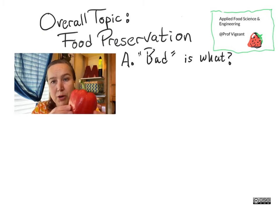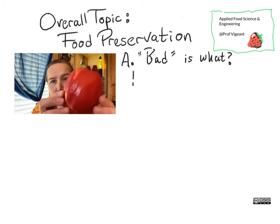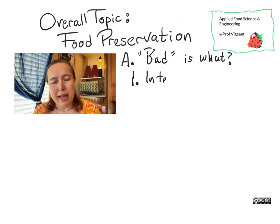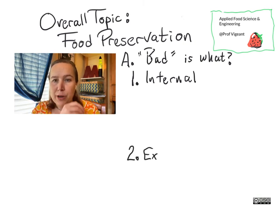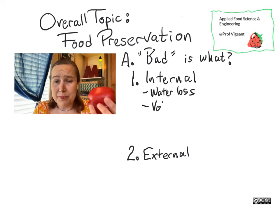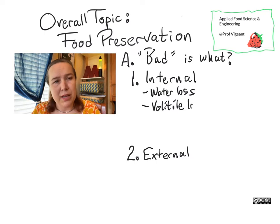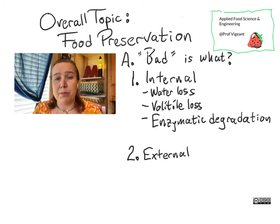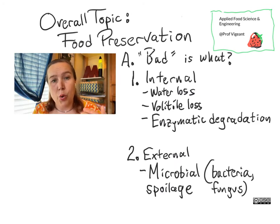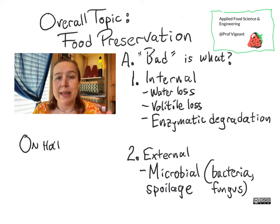For example, this pepper which I bought a week ago — you can see it's gotten a little bit wrinkly. That means it's a little bit past its prime and might not be as crisp as it would have been otherwise. But I wouldn't go so far as to call this bad yet. Bad would be turning black or having white fuzzy spots on it. So let's get into the difference between these different types of bad and how we preserve against each of them.